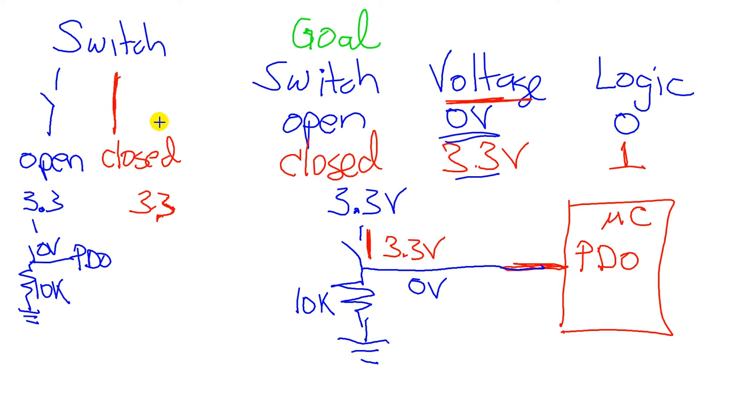And if the switch is closed, then it's connected, and we have PD zero connected directly to 3.3V. We get 3.3 volts here. The resistor's still there, but it's not getting in our way. So we see this works. That's half. Next, we'll do the light emitting diode.